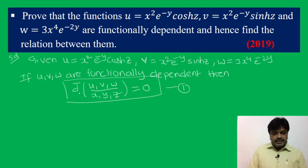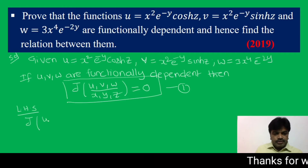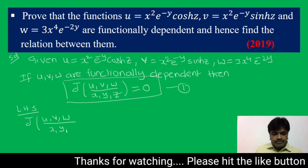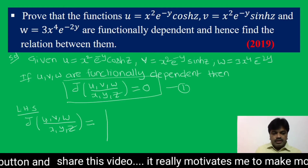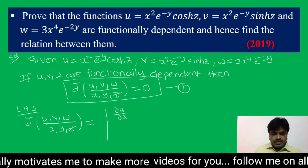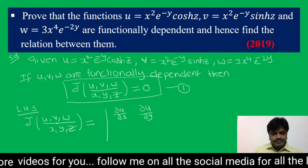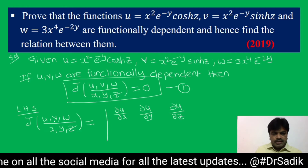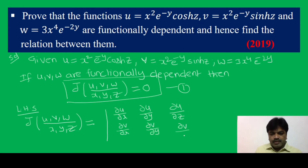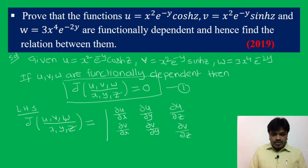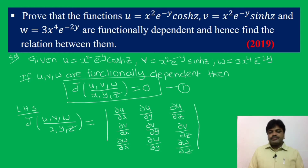To prove this, we take LHS: J(u, v, w) / J(x, y, z). By the Jacobian definition, this equals the determinant with first row ∂u/∂x, ∂u/∂y, ∂u/∂z; second row ∂v/∂x, ∂v/∂y, ∂v/∂z; and third row ∂w/∂x, ∂w/∂y, ∂w/∂z. This is the formula.